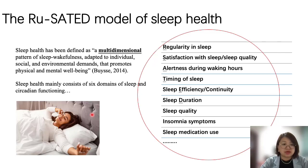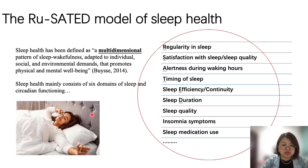Sleep health mainly consists of six domains of sleep and circadian functioning. These are: regularity in sleep, satisfaction with sleep or sleep quality, alertness during waking hours, timing of sleep, sleep efficiency or continuity, sleep duration, sleep quality, insomnia symptoms, and sleep medication use.